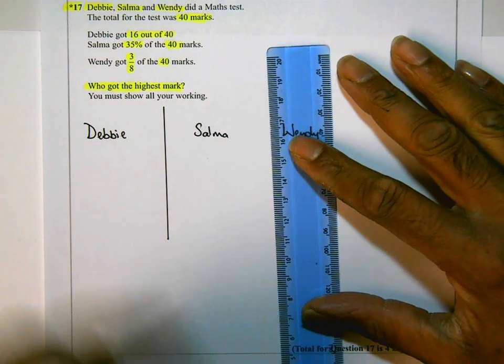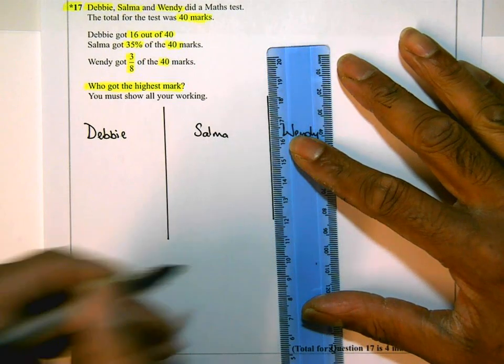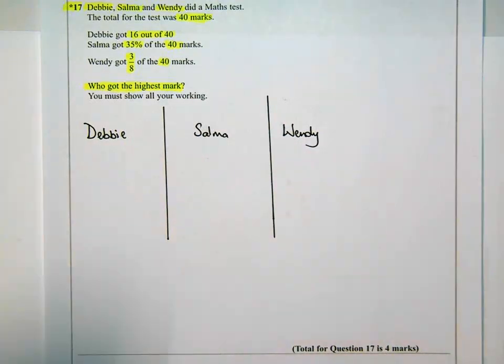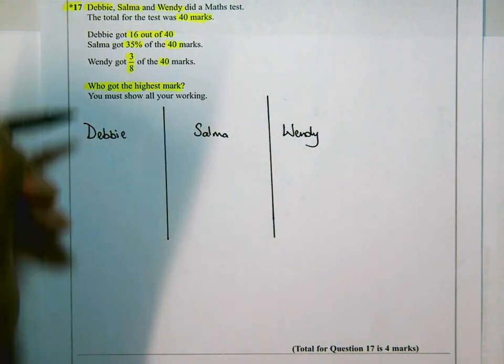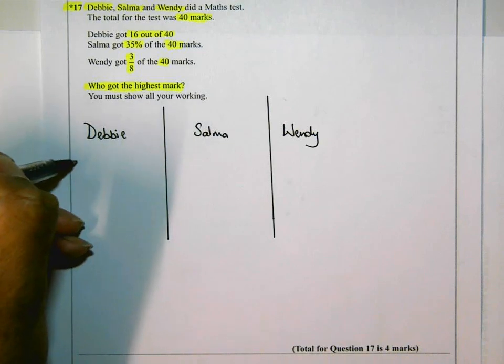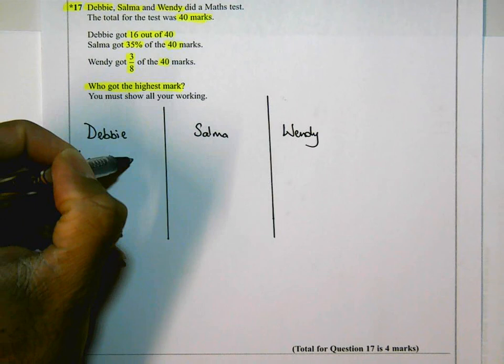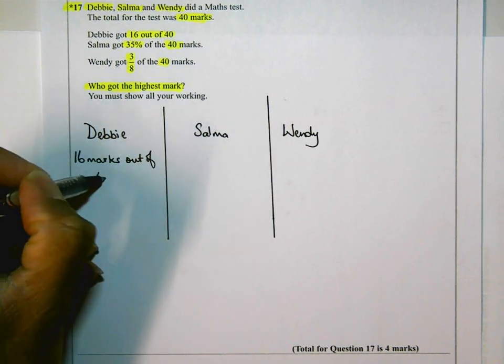And this is about setting out my working so that the examiner can see what I'm doing, and it's all clear to them. So Debbie got 16 marks out of 40, so she got 16 altogether.